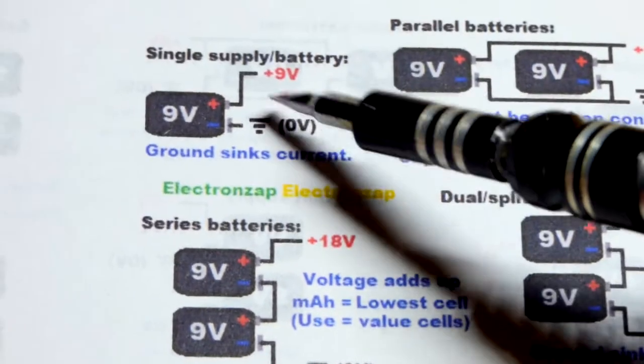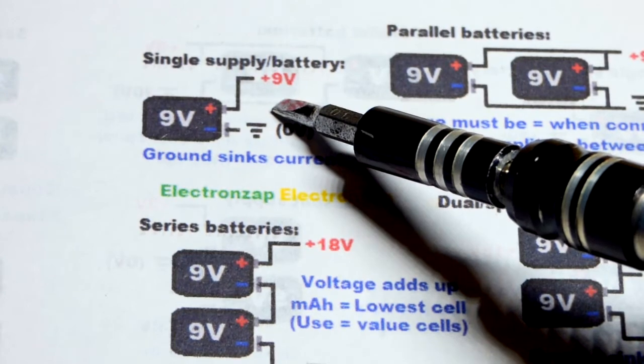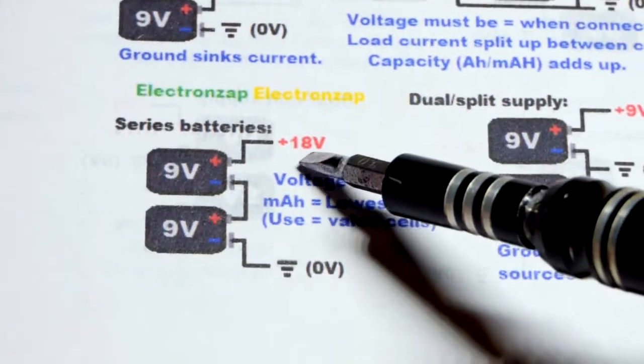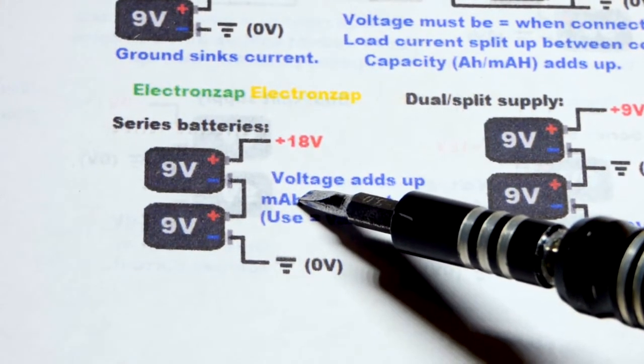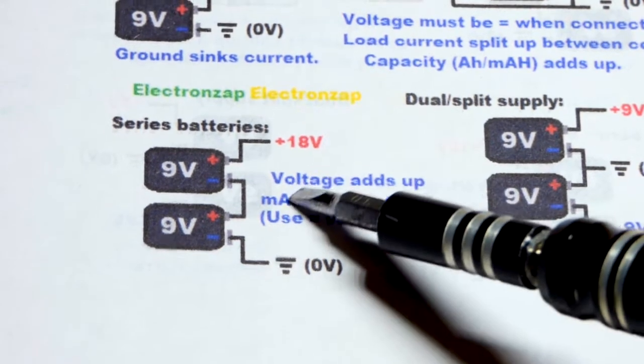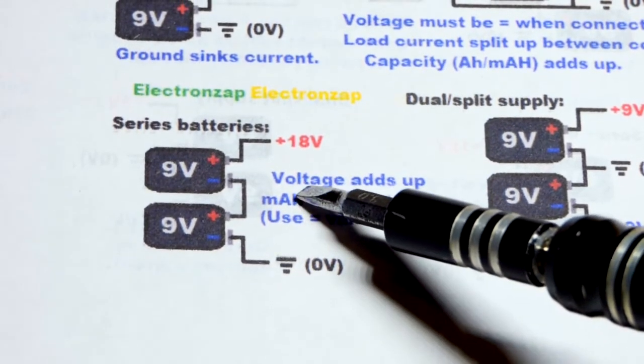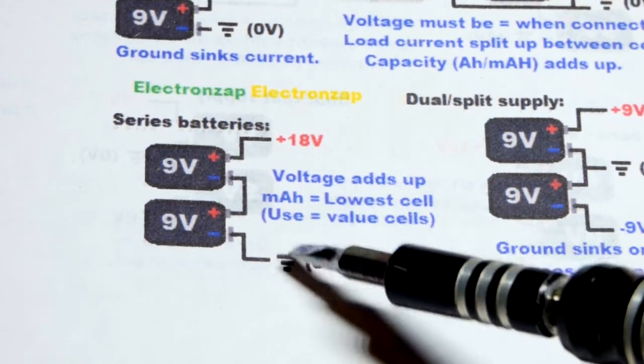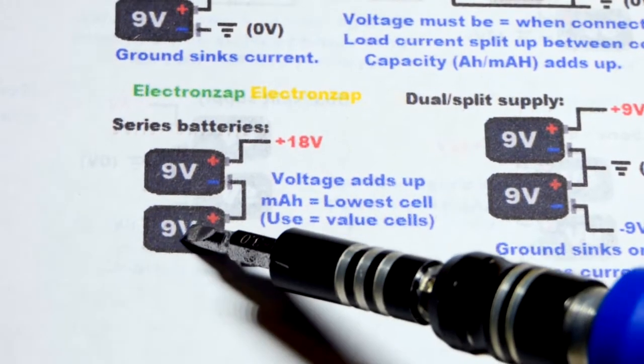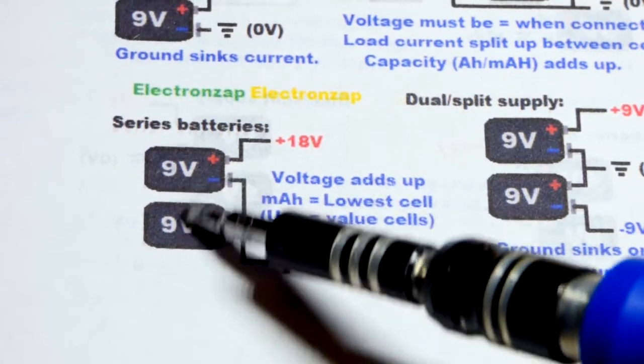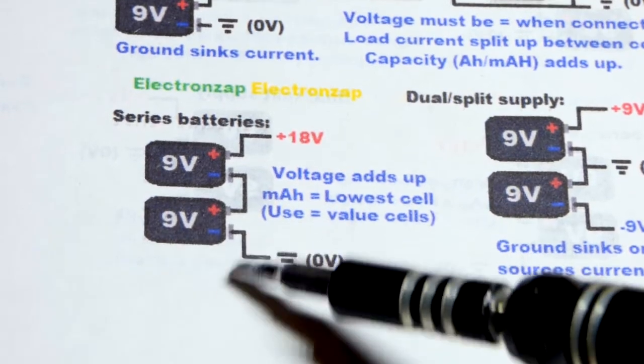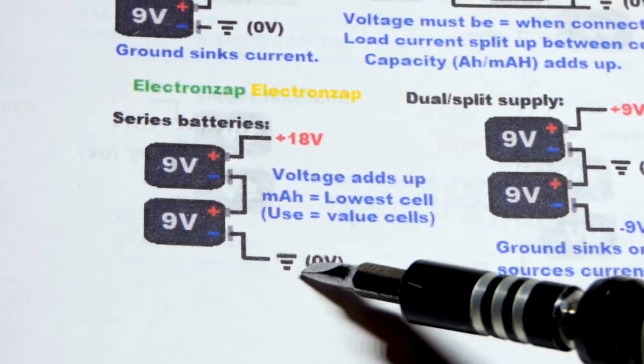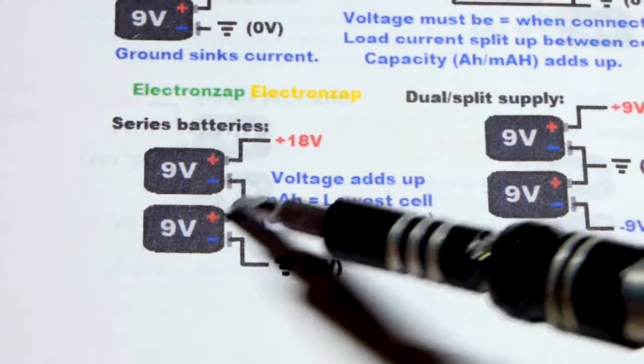So maybe you can light two series LEDs with a single battery at 9 volts. With 18 volts, you could light four series LEDs. And the same brightness for the same amount of time. So you've got twice as many LEDs in series lit up for the same amount of time. So the current is whatever the lowest value battery can provide. So you want to use equal batteries. That's the current you'll get through the two of them. So use equal value cells.